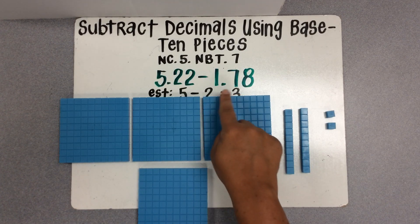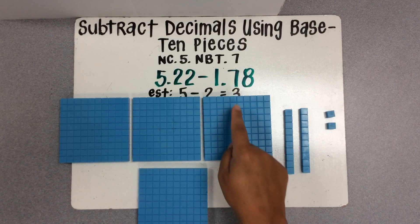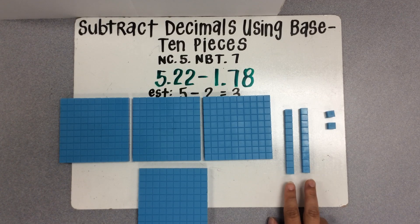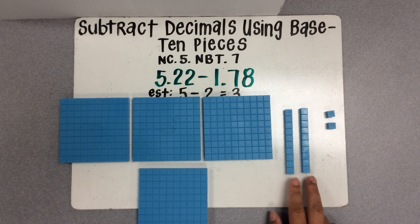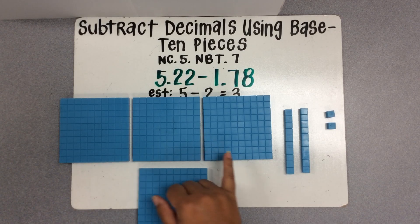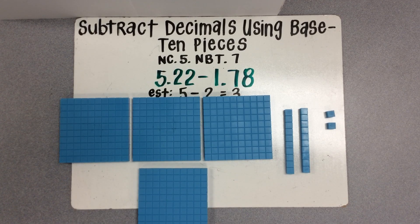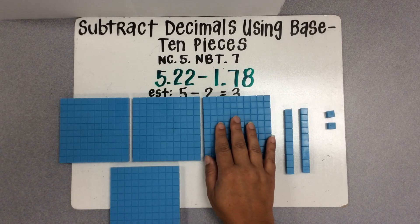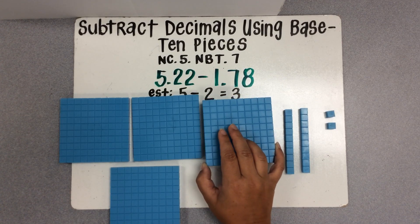Now I know the next thing I need to subtract from 1 and 78 hundredths is 7 tenths. I see 2 tenths here, however we need to take away 7 tenths. I know there are only 2 tenths here, but in these remaining 4 wholes there are a lot of tenths — in fact, there are 40 tenths. So I know that I could take 1 of these wholes and ungroup it for 10 tenths to help me subtract. So I'll do that now.